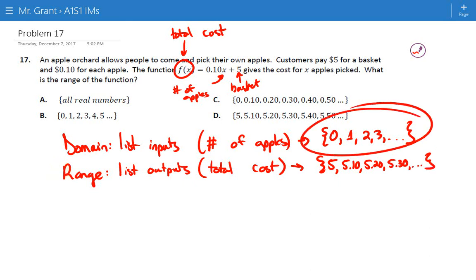So this is our list of our inputs, the number of apples. Our range is the list of outputs. They're asking, what's the range of the function? Well, it looks to me like D.